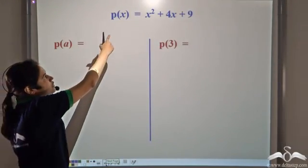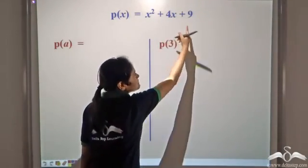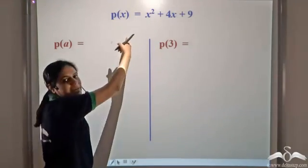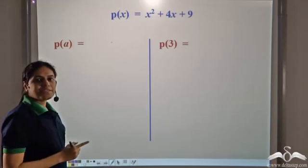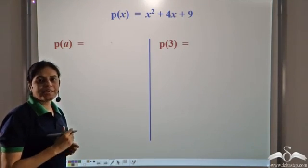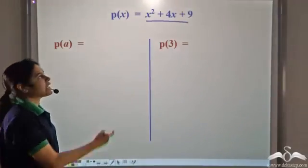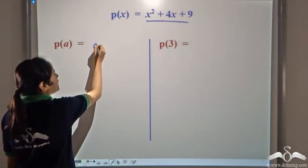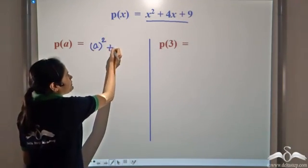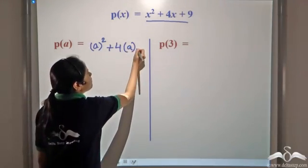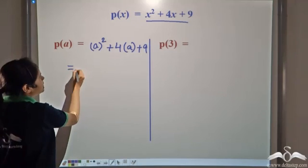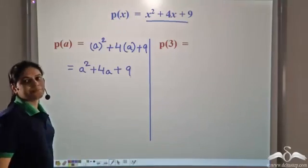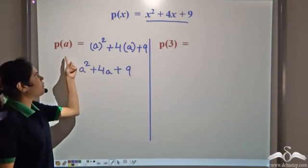Now what is P(a)? We know P(x) is equal to x² + 4x + 9. In order to calculate P(a), we evaluate P(x) at x equal to a by substituting a in place of x. So we get a² + 4a + 9. This is P(a).